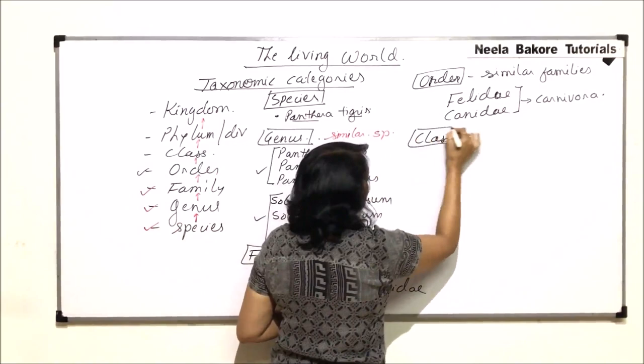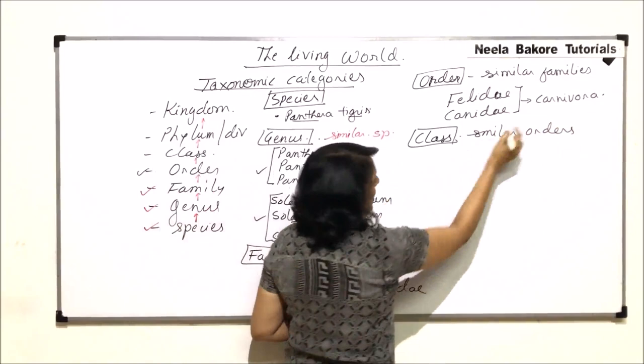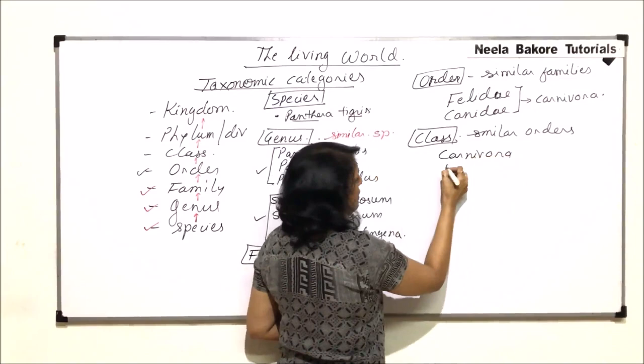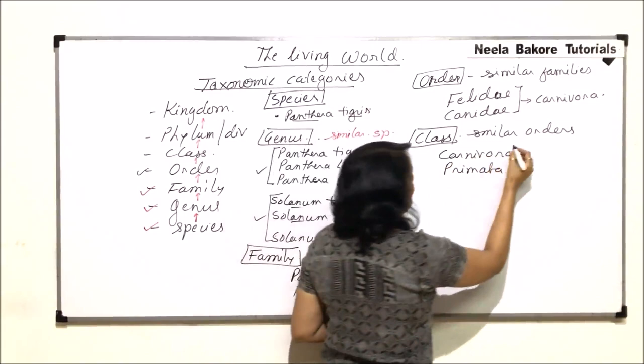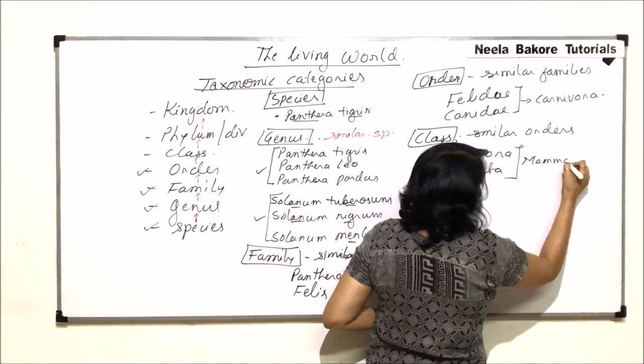The next category is class. How do we define class? Class would have similar orders — similar orders would be placed in one class. Let us take Carnivora, and let us take one more: Primata, or Primates. They are placed in the same class. That class is Mammalia.